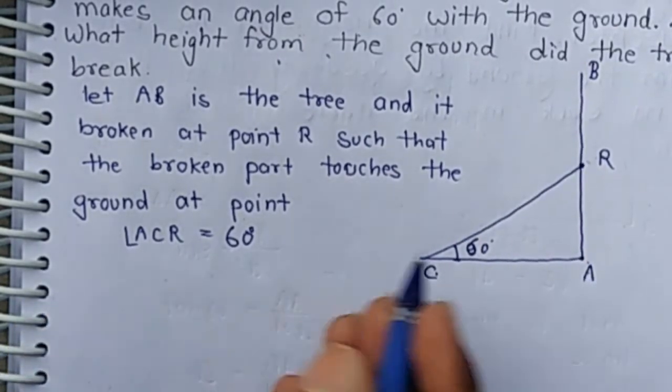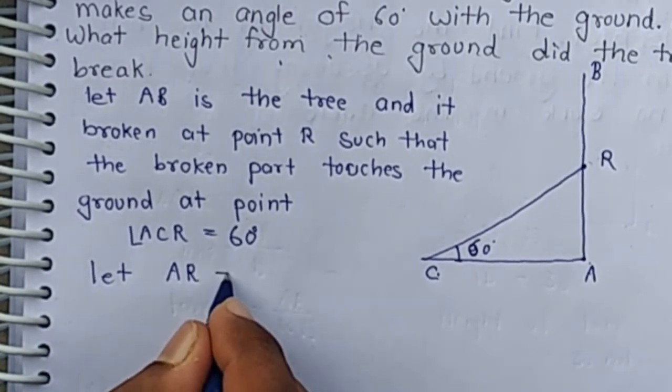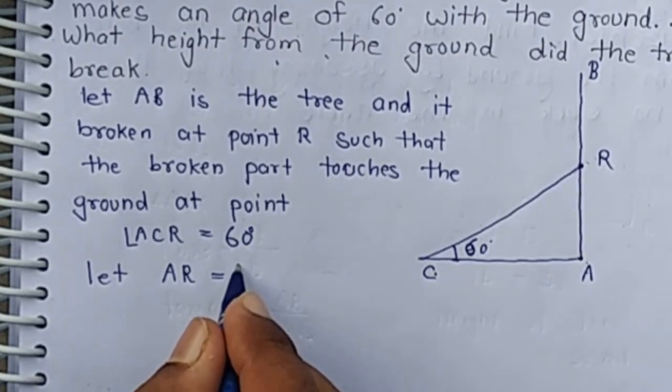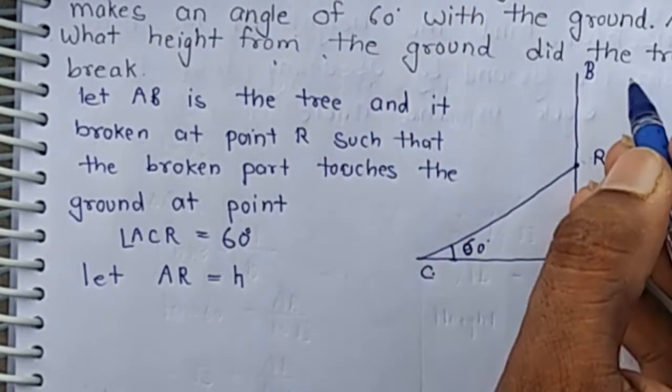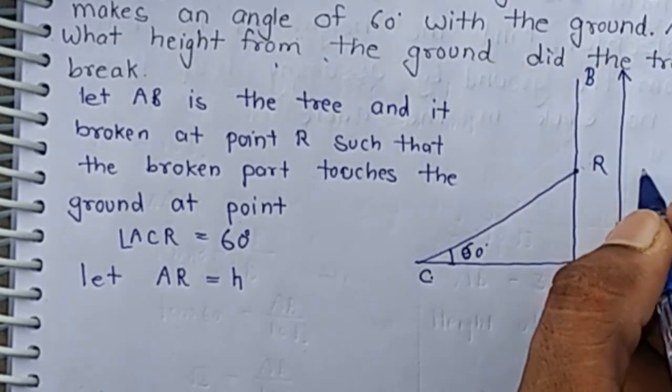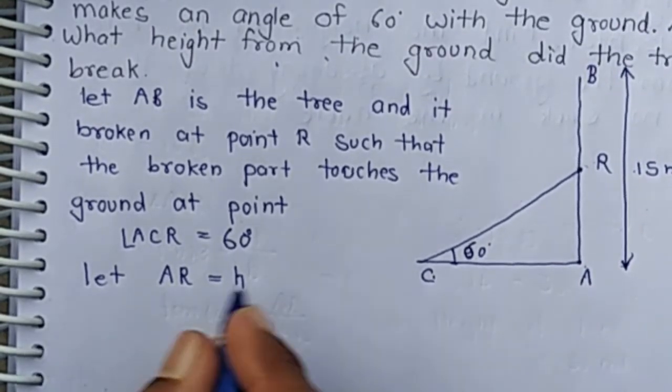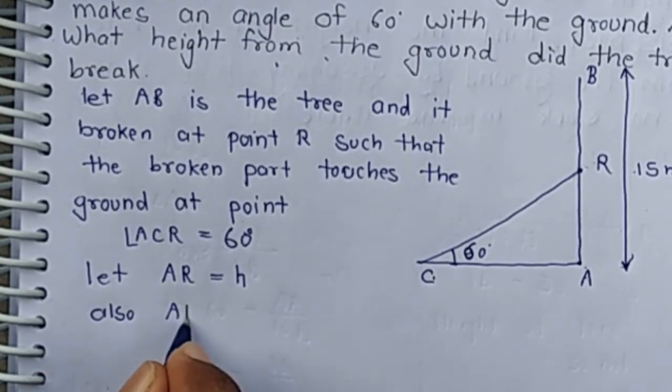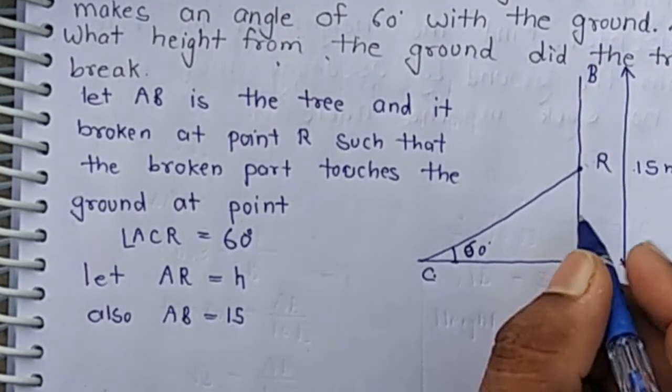Then we have to find AR. Let AR equal H and total height of the tree is 15 means AB equal 15. Since AB is 15 and AR is H, then BR is AB minus AR which equals 15 minus H.